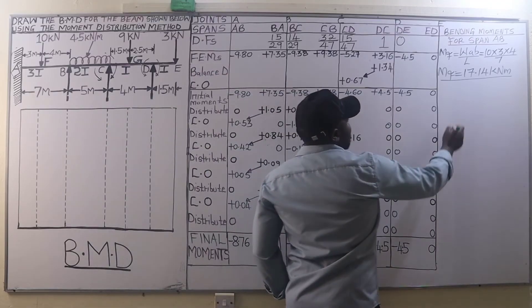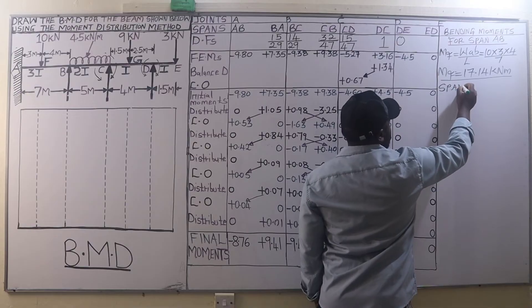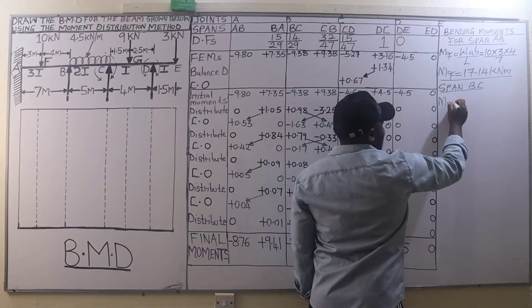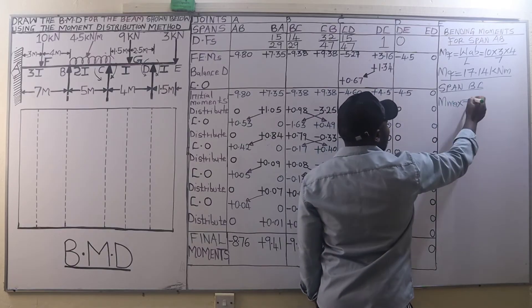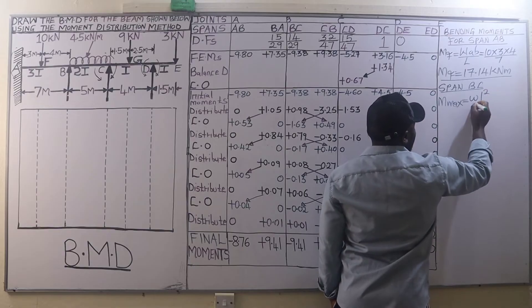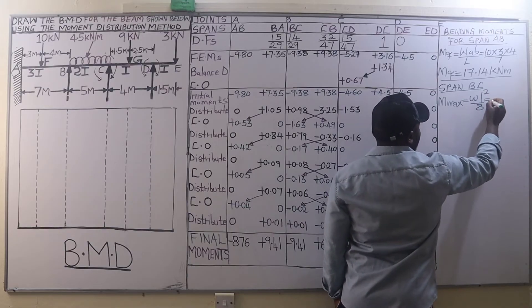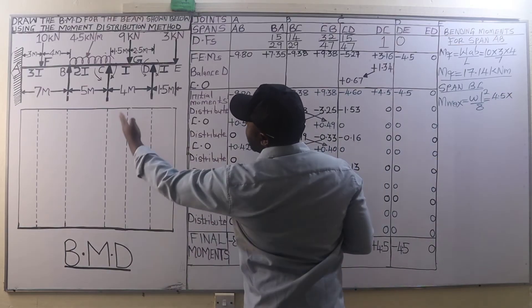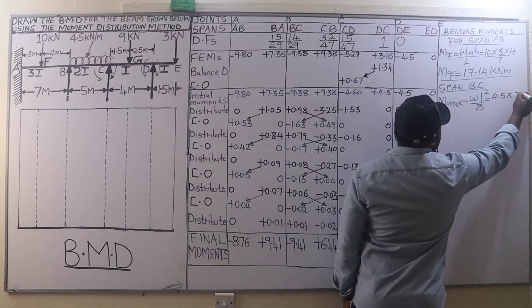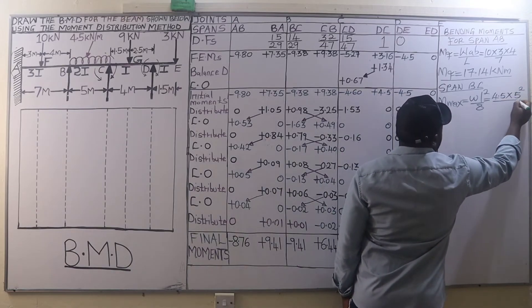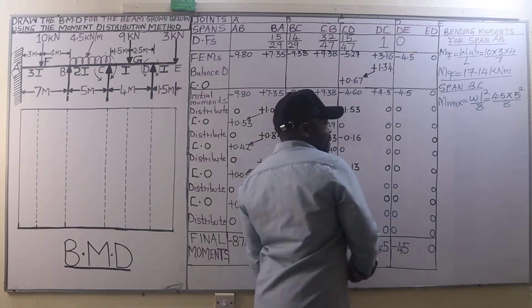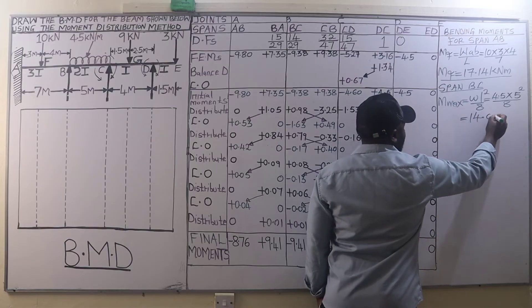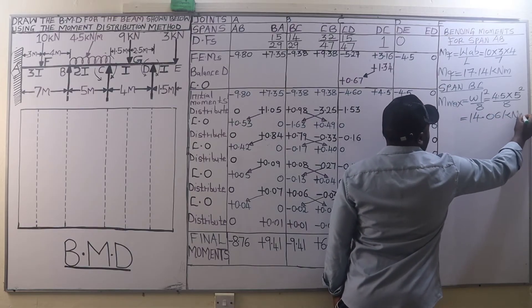On span BC, the maximum bending moment — since that span is loaded with a UDL — is given by wL²/8. This is 4.5 times 5 squared divided by 8, giving a maximum bending moment of 14.06 kilo-newton-metres.